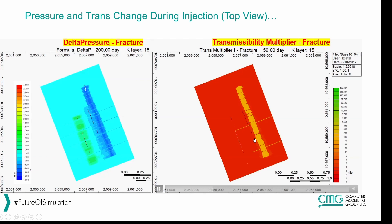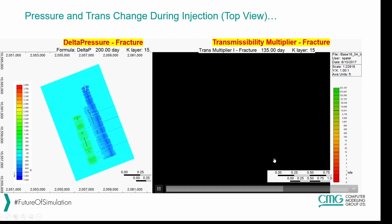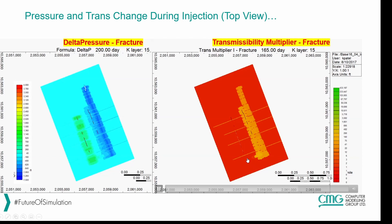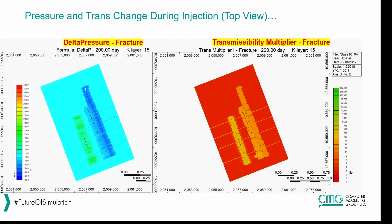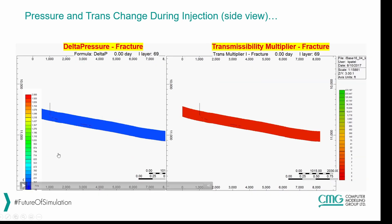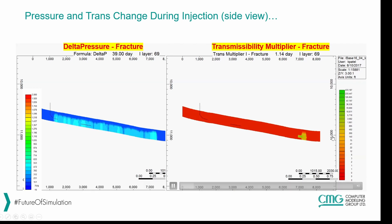Once production happens, the transmissibility starts decreasing. When we frack the first child well, the transmissibility starts increasing again. After that well is fractured and produced for three more months, the third well is fractured and again the transmissibility increases. The side view shows the same process — the delta pressure and transmissibility multiplier on the right side show how each stage is being fractured one at a time based on the specified injection.